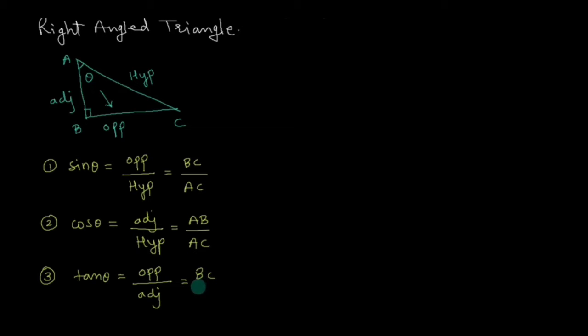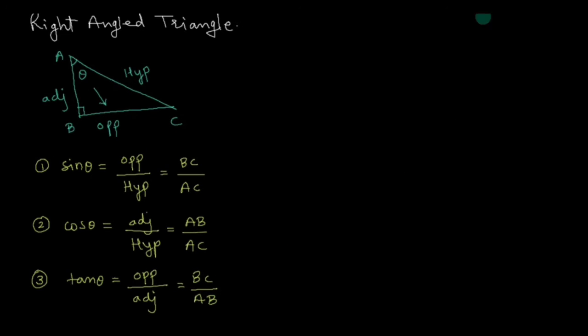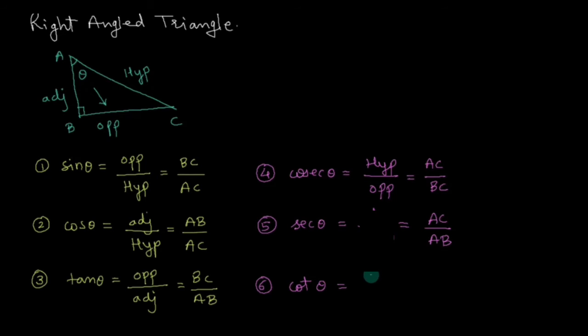These three are the basic ratios. Now I'll write down the remaining three ratios exactly in front of the previous three. For example, we're writing cosec exactly in front of sine—they are inverses of each other. Sine is opposite upon hypotenuse; cosec is hypotenuse upon opposite: cosec θ = AC/BC. The inverse of cos is sec theta—it's the ratio of hypotenuse upon adjacent: sec θ = AC/AB. Then comes the inverse of tangent, which is cotangent, cot theta. It will be adjacent upon opposite: cot θ = AB/BC.